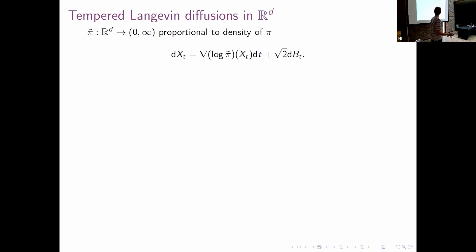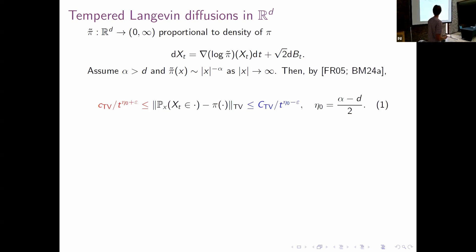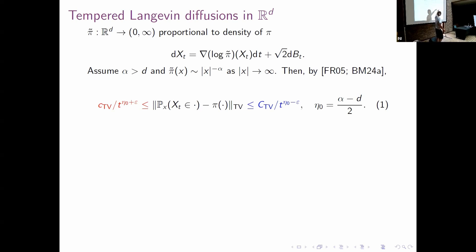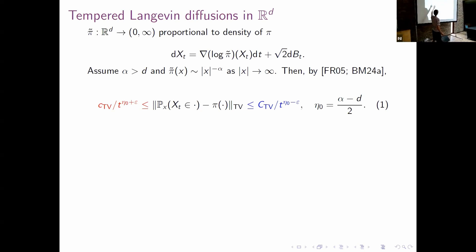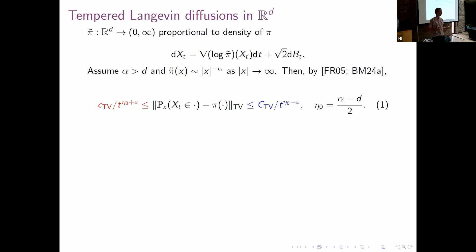This is a well-known process, studied for many years. If we have a polynomial density that decays asymptotically as x to minus alpha—where alpha must be greater than d—then convergence to stationarity decays polynomially as (alpha minus d) over 2. So for a very heavy-tailed invariant measure, something barely integrable, convergence is very slow. The natural question is: can we construct another diffusion with multiplicative noise admitting the same invariant measure, and how will this impact the rate of convergence?